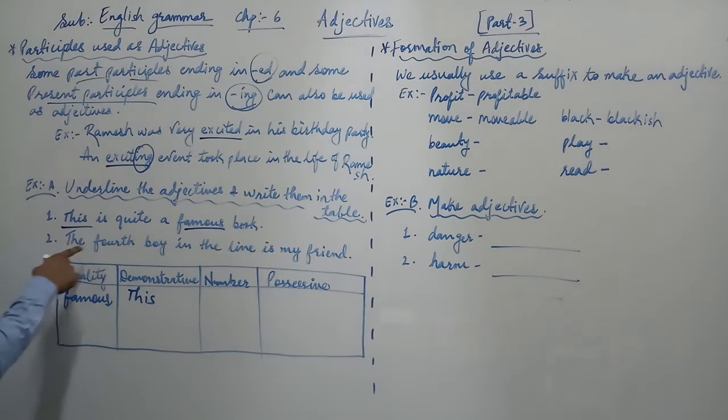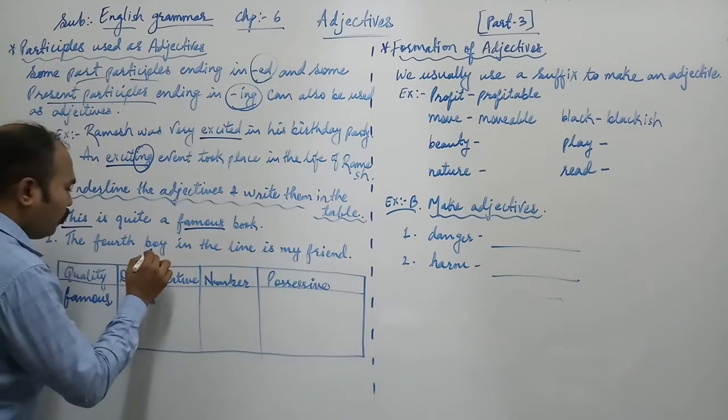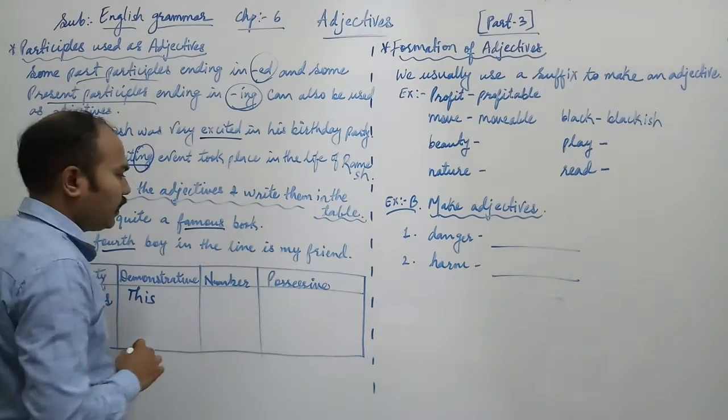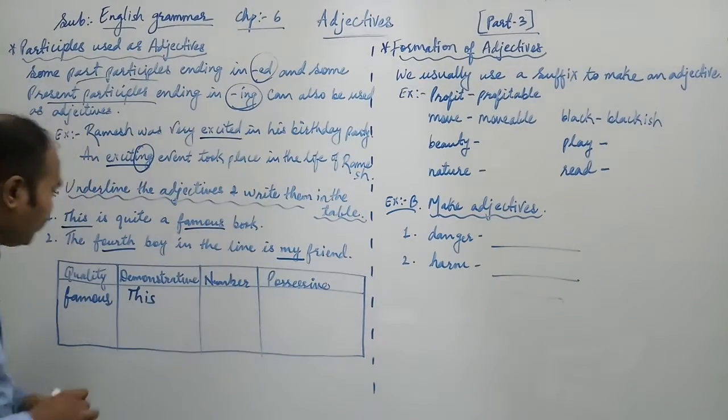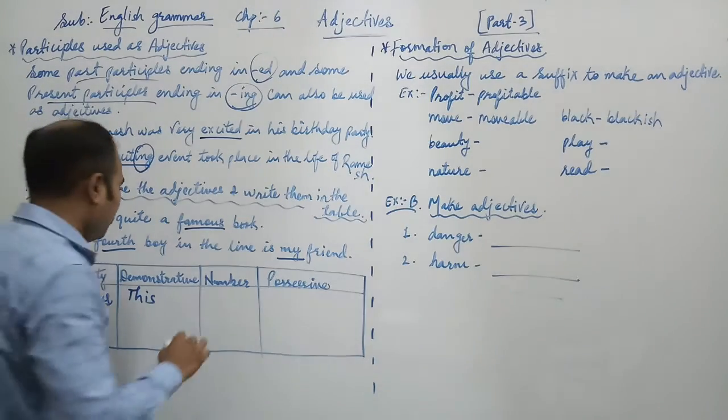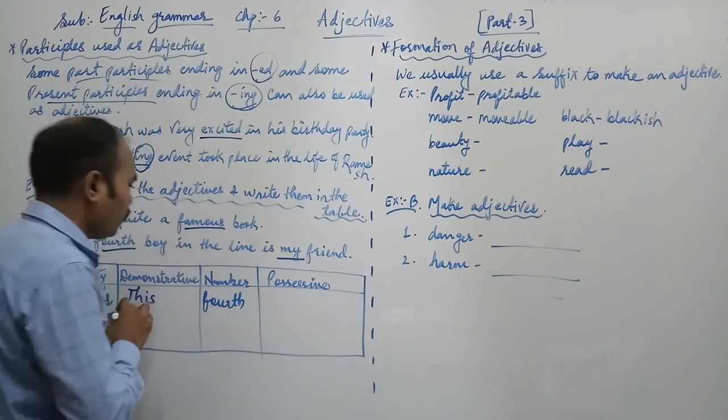The 4th boy in the line is my friend. Now noun is boy. The boy is described by 4th, in the line is my friend. Her friend is described by the word my. So 4th, which tells you the number, you can write down the word here as 4th, adjective of number.